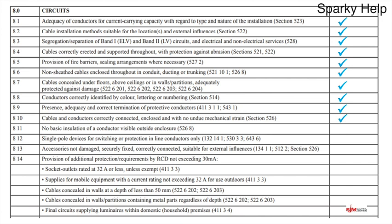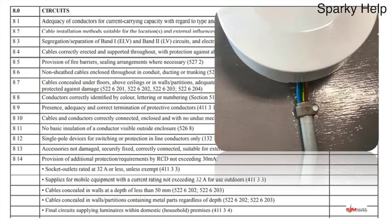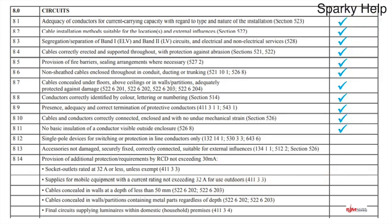No basic insulation or conductor visible outside the enclosure. Basic insulation is the brown and blue actual insulation on the cable — that would not be good if it's outside the enclosure, so that's not acceptable and would have to be rectified. But let's assume it has been and go for a tick.